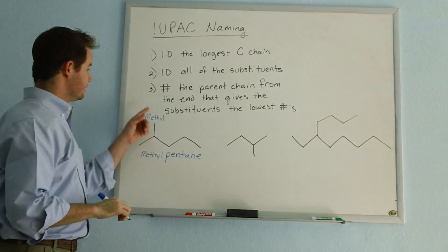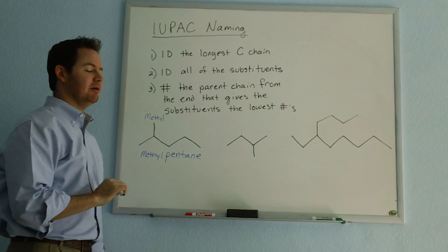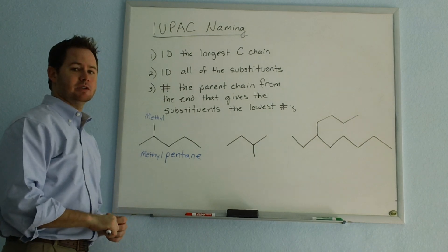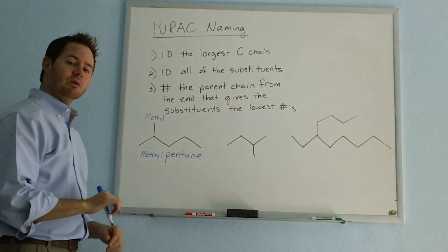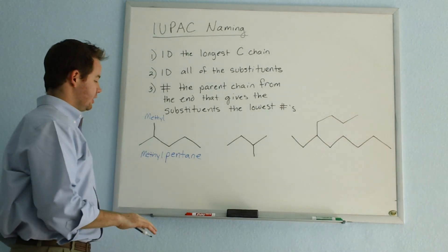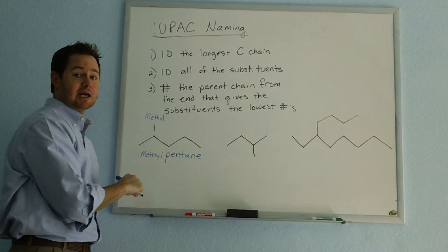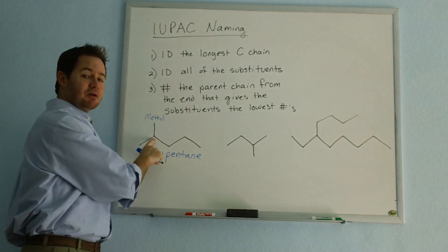And lastly, we need to look at rule number three. We have to number the parent chain from the end that gives the substituents the lowest numbers possible. Well, let's take a look at our options for this chain. We could number it one, two, three, four, five, which means that our methyl group would branch off of carbon number four.